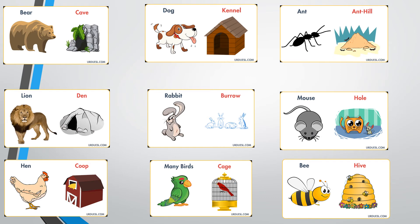Different animals live at different places, like bear lives at cave, dog at kennel, ant at ant hills, lion at den, and so on.